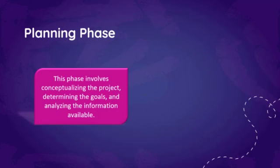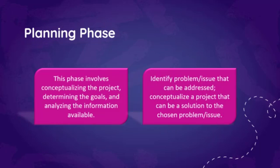Planning phase: this phase involves conceptualizing the project, determining the goals, and analyzing the information available. You have to identify the problem or issue that can be addressed. Technically, the planning phase of your ICT project already began on Module 2 — you conceptualize a project that can be a solution to the chosen problem. That is why the advocacy plan you created was based on a local or regional issue that you feel needs social change or a social advocacy plan.